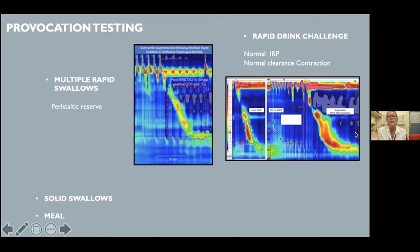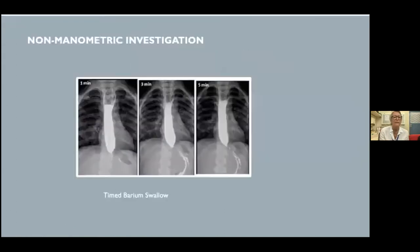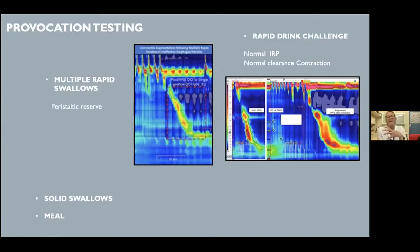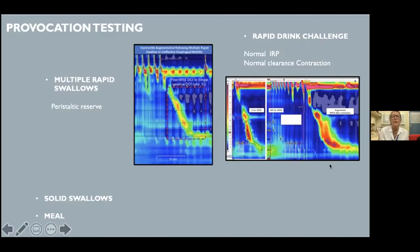If the rapid drink challenge doesn't provide answers, solid swallows are given in the secondary position — 1 cm × 1 cm bread pieces, 10 of them, or a meal such as three slices of buttered bread with crusts removed, or a standard pie from a cafeteria. This aims to demonstrate increased IRP or changes in contraction pattern to explain dysphagia or chest pain. Additional non-manometric investigations include the timed barium swallow, measuring the barium column at one, three, and five minutes, used when outflow obstruction is suspected but not clearly categorizable.